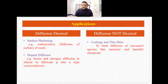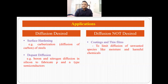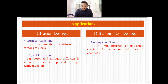There are certain applications where diffusion is desired — we want diffusion to occur — and other applications where we do not want diffusion to occur. One example where diffusion is desired is surface hardening, specifically carburization of steels. Here, we are trying to diffuse carbon into the surface of steel so that the surface hardens and we achieve good surface hardening. In this case, diffusion is desired.